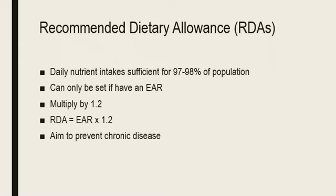The ultimate goal of the Estimated Average Requirements is to prevent deficiency of these nutrients. The Recommended Dietary Allowances, also known as the RDAs, are daily nutrient intakes sufficient for 97 to 98% of the population. The RDA is based on the Estimated Average Requirement. If there is no EAR set, then there cannot be an RDA. To get the RDA, you must multiply the Estimated Average Requirement by 1.2.